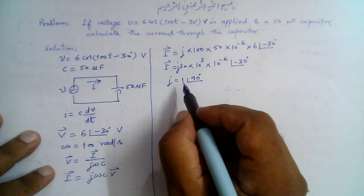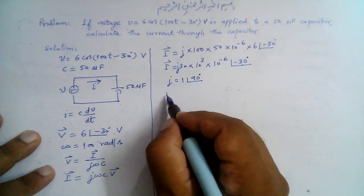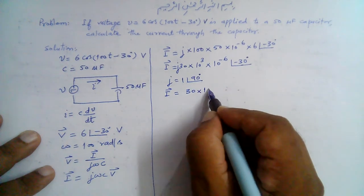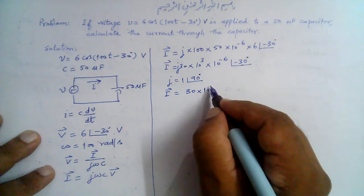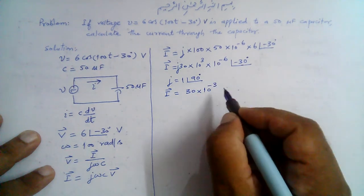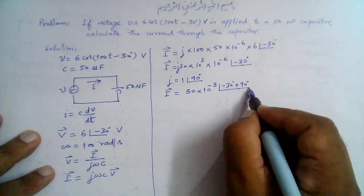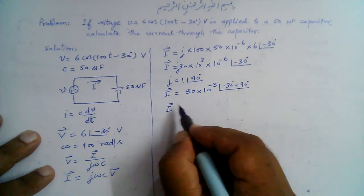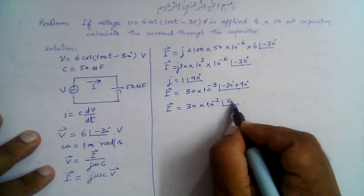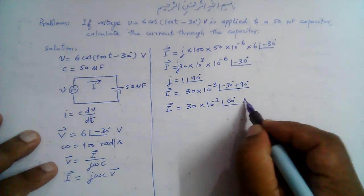And this j is equal to 1∠90°, so we simply remove this j here and add +90° here. So I̅ = 30 × 10^(-3+(-6)+3) = 30 × 10^-3, and this is -30° + 90° = 60°. So the result is 30 × 10^-3 ∠60°.